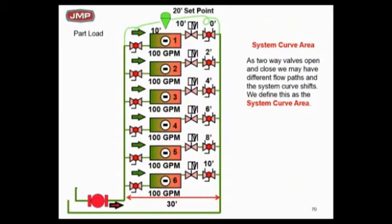Now, if everything's wide open, all the two-way valves are wide open at 600 GPM, one percent of the time, we know where we are. But anything less than that, do you know what your system curve is doing? Do you know really where you are? I'll give you an example.